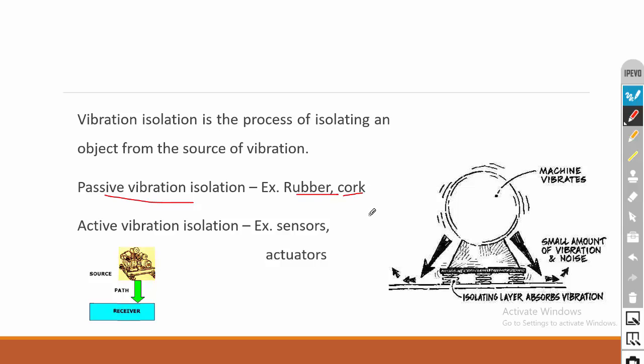In passive vibration control we can use rubber or cork as the isolation pad. In most machinery you might have seen rubber material between the leg of the machine and the floor. The rubber material absorbs the vibration and isolates the vibration generator in the machine, not allowing the generated vibration to be transmitted to the floor.